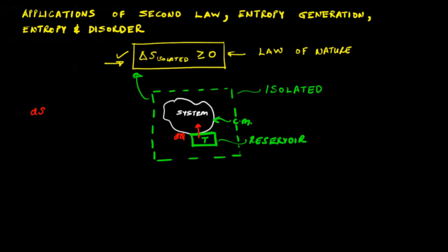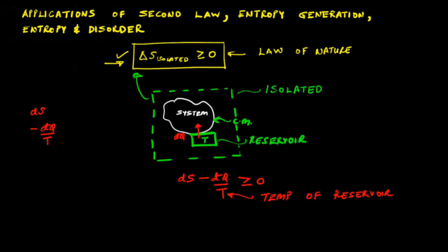The entropy of the thermal reservoir decreases by dq/T because the temperature of the thermal reservoir is not going to change. So, if you look at the combined isolated system, its entropy change is ds (of the control mass) minus dq/T (of the thermal reservoir). The second part of the second law says that entropy of an isolated system cannot decrease, therefore this must be greater than or equal to zero. Note that T here is the temperature of the thermal reservoir that supplies heat dq to the system.